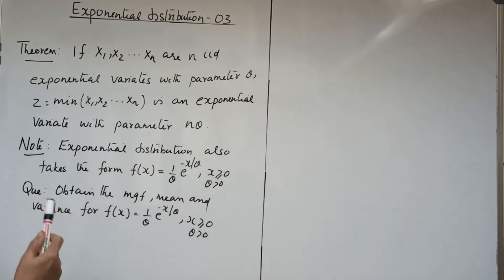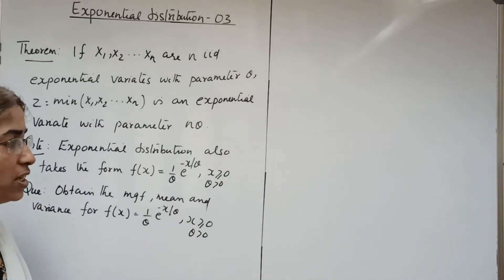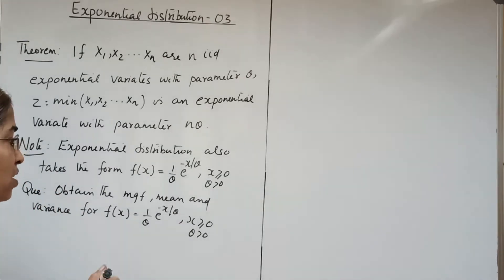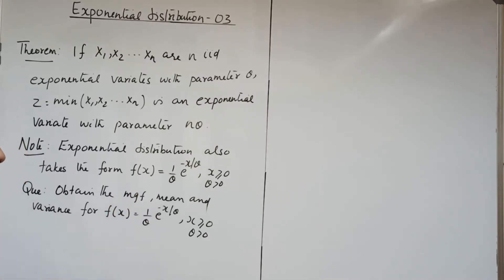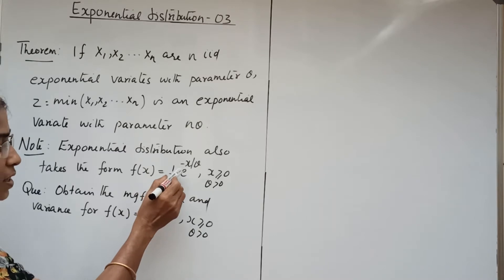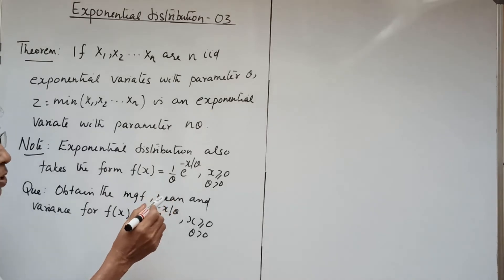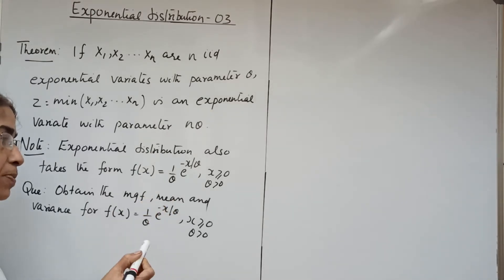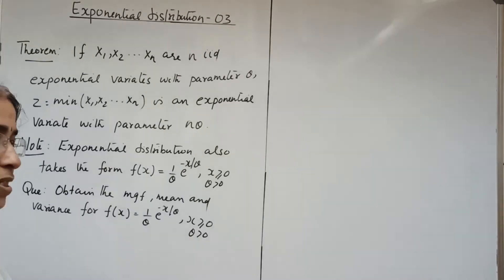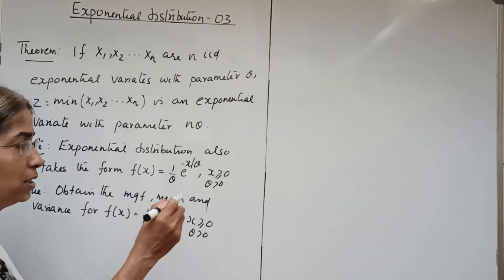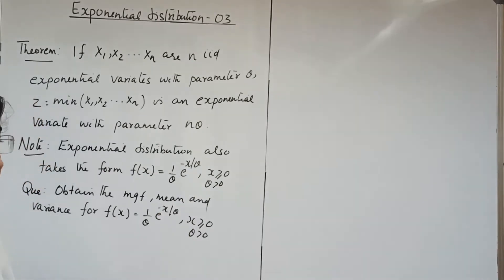Now we consider another form of exponential distribution, which is f of x equal to 1 by theta e raised to minus x by theta, x greater than or equal to 0, theta greater than 0. Already we have discussed the PDF as f of x equal to theta e raised to minus theta x, x greater than or equal to 0, theta greater than 0.